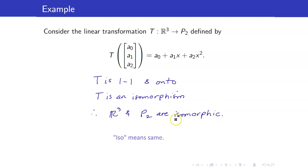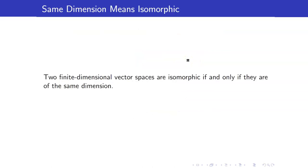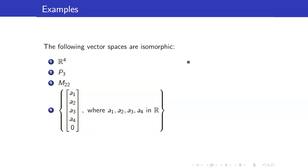Isomorphism essentially means the two vector spaces are the same — 'iso' means same, 'morphic' means same form. The linear transformation tells us how to rename elements from R3 to P2. Here is our big theorem: two finite-dimensional vector spaces are isomorphic if and only if they are of the same dimension. From now on, if we see two vector spaces with the same dimension, we already know they are automatically isomorphic. For example, these four vector spaces are all isomorphic because they all have dimension equal to 4.